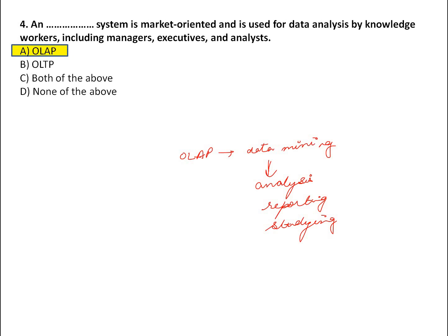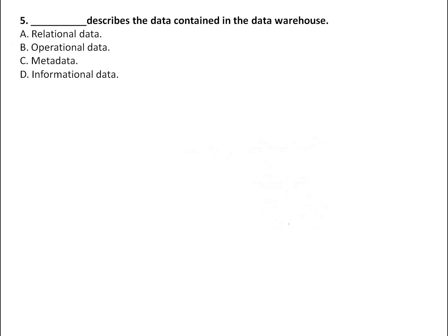The next question: what describes the data contained in the data warehouse? Data about data is called metadata. So the answer is metadata.